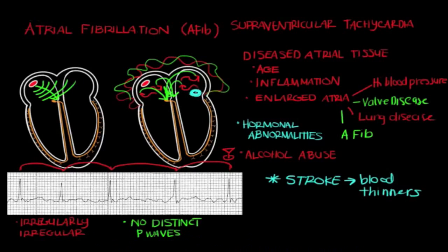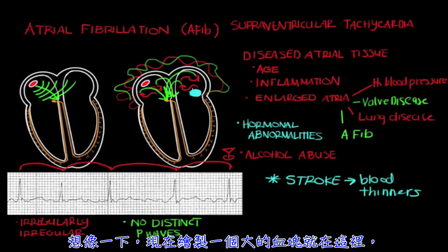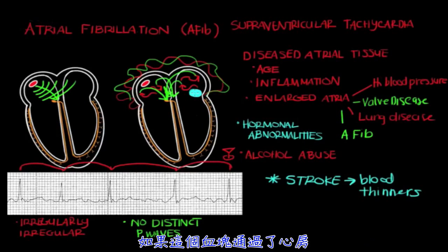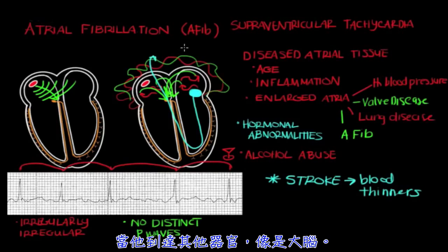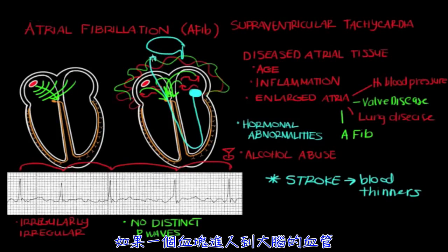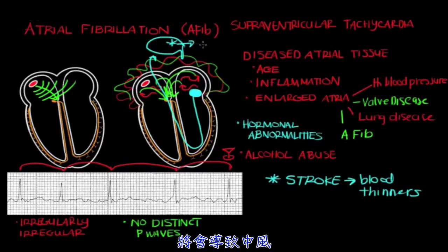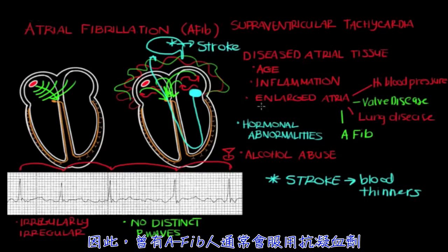The blood doesn't move — and what happens to blood that doesn't move? It clots. Imagine a big clot forming in the atrium; if that clot escapes the atrium, goes to the ventricle, and out to the rest of the circulation, it can travel to other organs including the brain. If the clot goes to a blood vessel that supplies the brain, that can lead to stroke. Therefore, people who have had AFib are usually put on blood thinners, which help prevent clot formation and thereby reduce the risk of stroke.